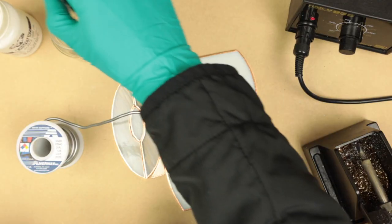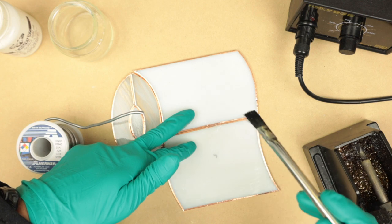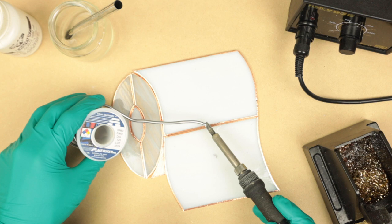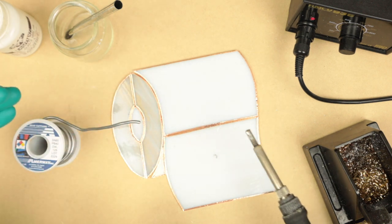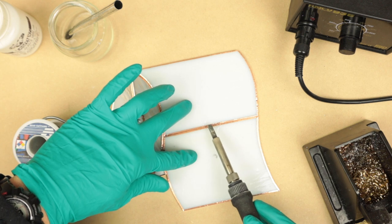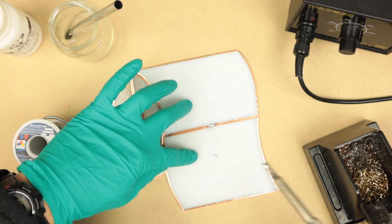So we want to tack these pieces together. Let's add some flux, just do a little spot right there. Just a little bit dab onto the soldering iron. And I like the positioning of my piece right now, so I'll hold those together and do a little drop just like that.